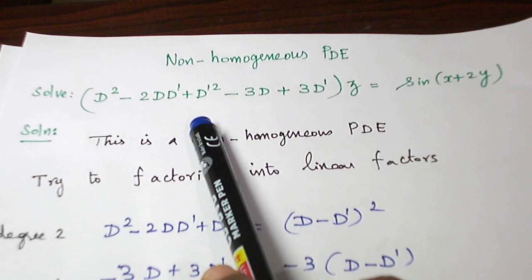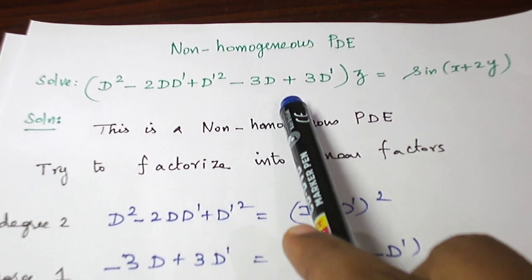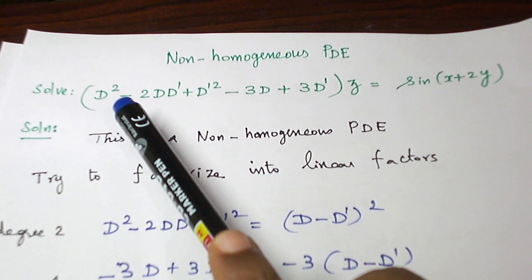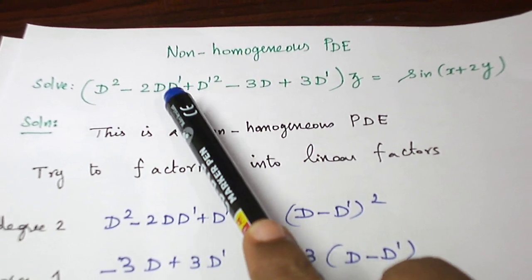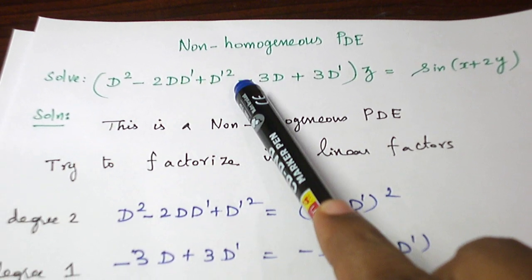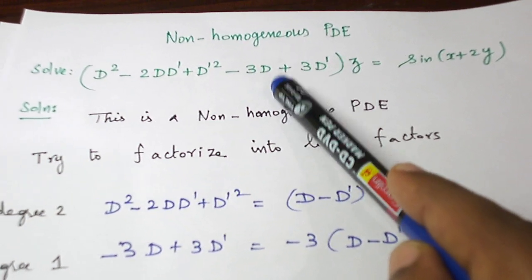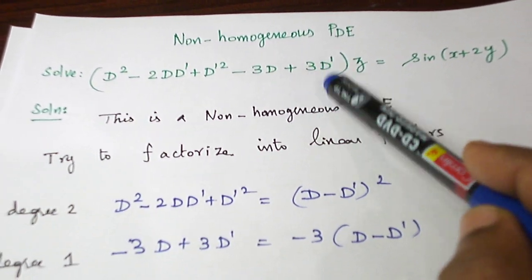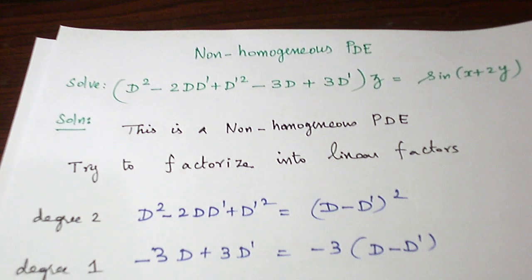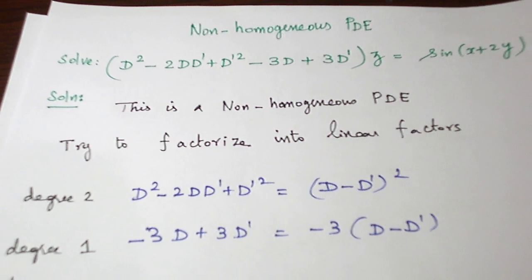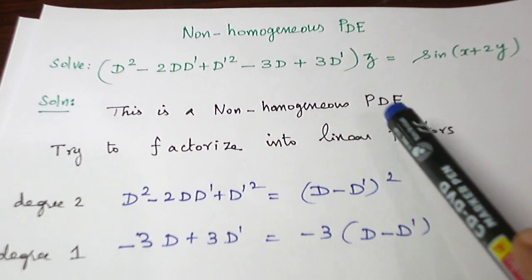First of all, verify whether it is a homogeneous or non-homogeneous partial differential equation. The first term degree 2, second term degree 1 plus 1 equals 2, third term degree 2, fourth term degree 1, fifth term degree 1. So the degrees are not same for all the terms. So it is a non-homogeneous partial differential equation.